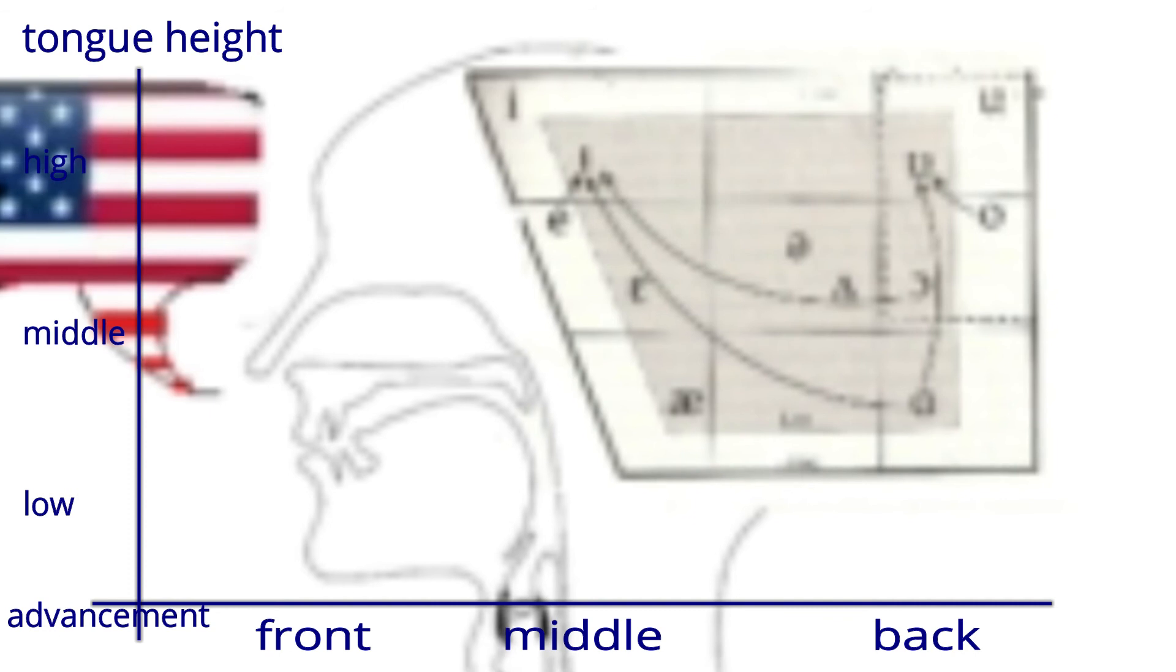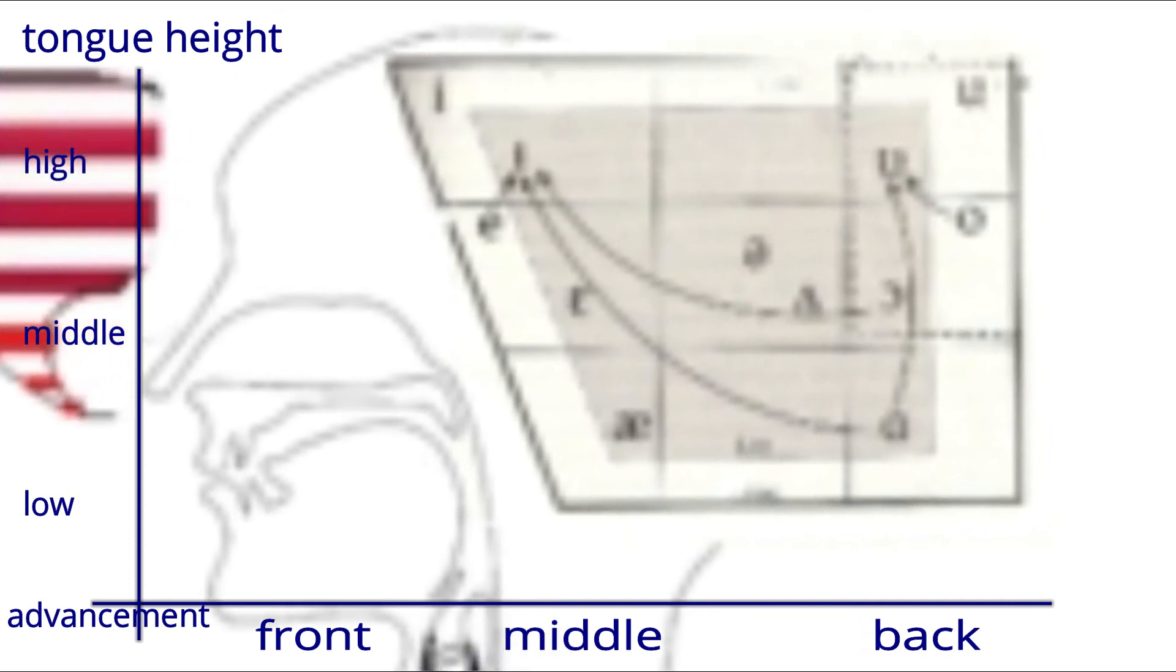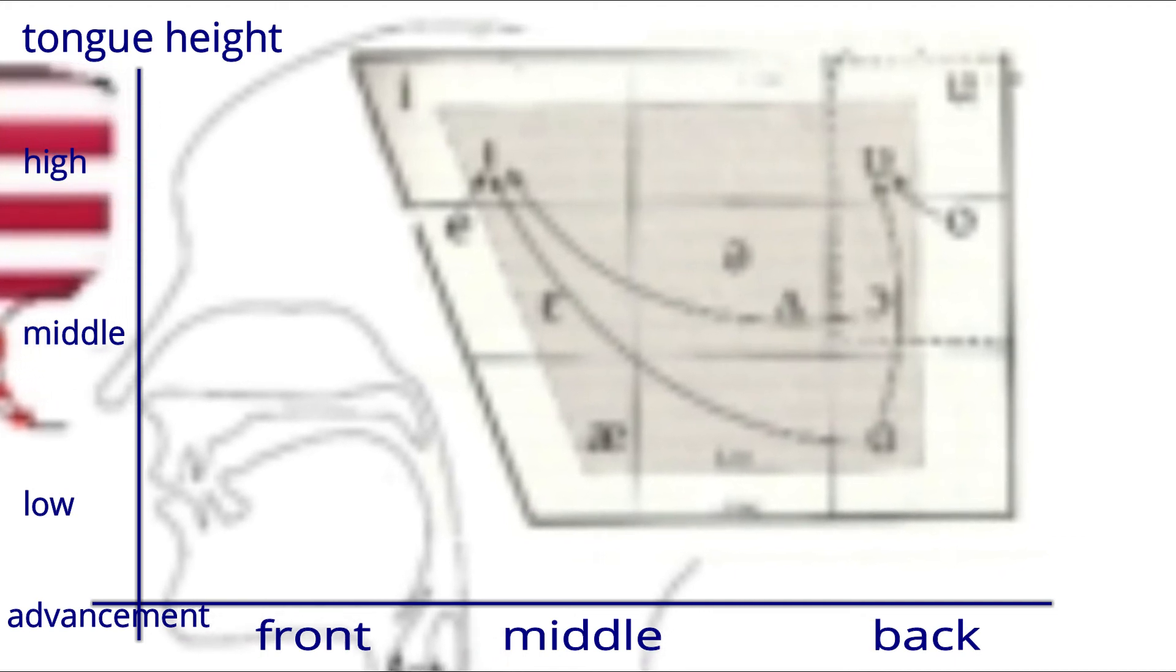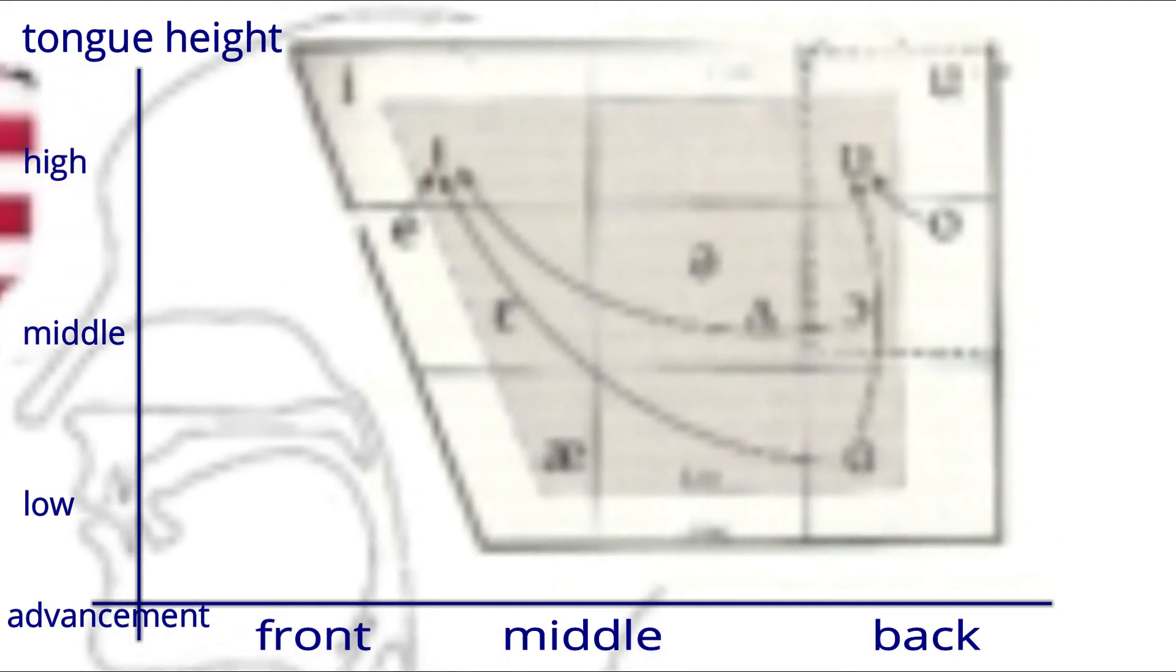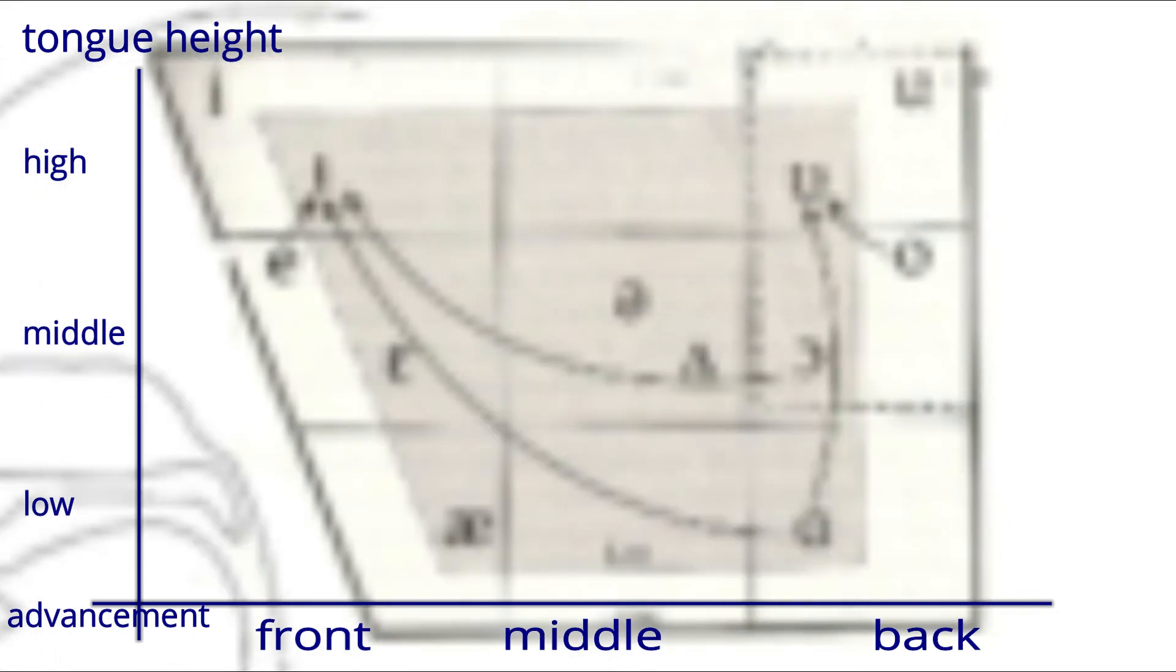Now that we classified vowels based on the tongue height and advancement, we can create the vowel diagram where the x-coordinate is the advancement and the y-coordinate is the tongue height. So, for instance, E is a front and high sound, meaning that the sound is produced in the front of the mouth with tongue raised high. A is a front and low vowel, and U is a back and high vowel.